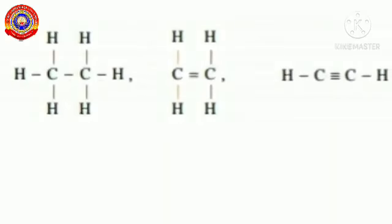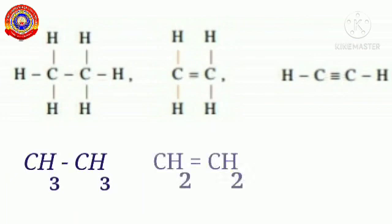Now observe the structures. These structures can also be written in condensed form, such as CH₃–CH₃ (single bond), CH₂=CH₂ (double bond), CH≡CH (triple bond). Such a representation is known as condensed formulae.